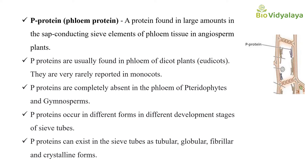P proteins are also known as phloem proteins and they are found in phloem. They are found in large amounts in sieve-conducting sieve elements of phloem tissue in angiosperm plants. P proteins are usually found in the phloem of dicot plants. They are commonly found in dicot plants but very rarely reported in monocots.